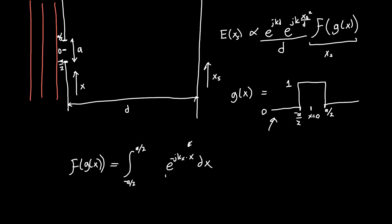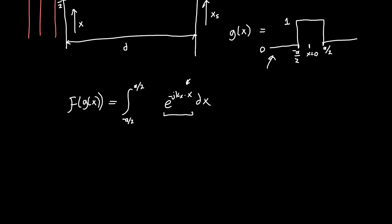We know how to integrate an exponential. We just get the 1 over whatever the argument of the exponential is, multiplied by what it was before. So this is just 1 over j times kx e to the minus j kx times x. And we're evaluating x goes from minus a over 2 to x goes to a over 2. Oh, and there should be a minus here.